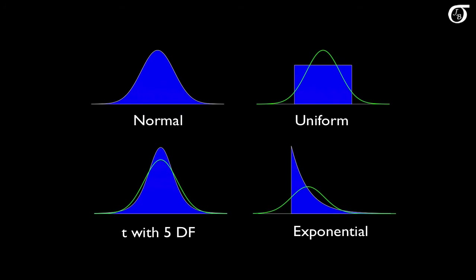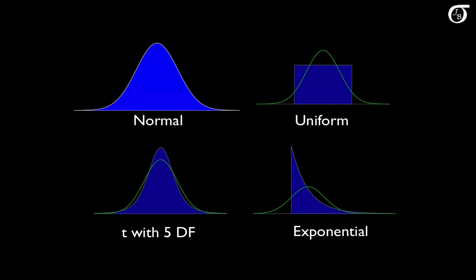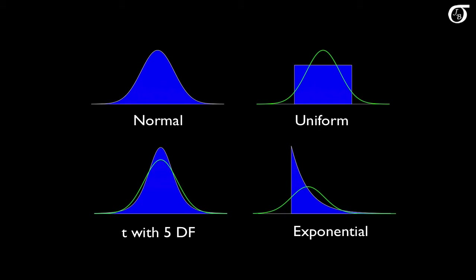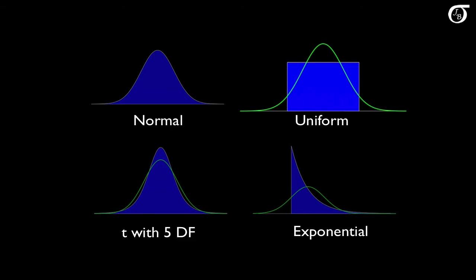To illustrate that, I'm going to run simulations where we are sampling from four different distributions. In one case, we'll be sampling from the normal distribution, so the normality assumption will be true in reality. In the other three cases, we'll be dealing with violations of the normality assumption. One distribution is the uniform distribution. The superimposed green curve is a normal curve with the same mean and variance. The uniform distribution has a flatter peak and lighter tails than the normal distribution, and we'll see what the consequences of that are.